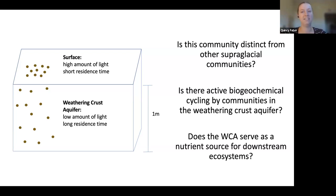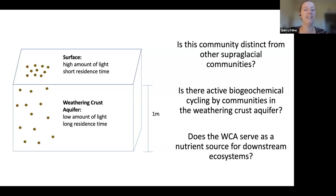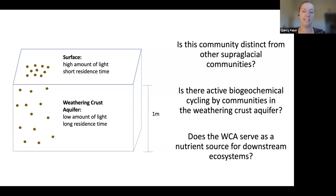The main research questions are: Is the weathering crust geochemically and microbiologically distinct from the superglacial surface communities? Is there active biogeochemical cycling occurring there, rather than just storage of nutrients and microbes? And if cycling is occurring, is the weathering crust serving as a nutrient source for downstream ecosystems?